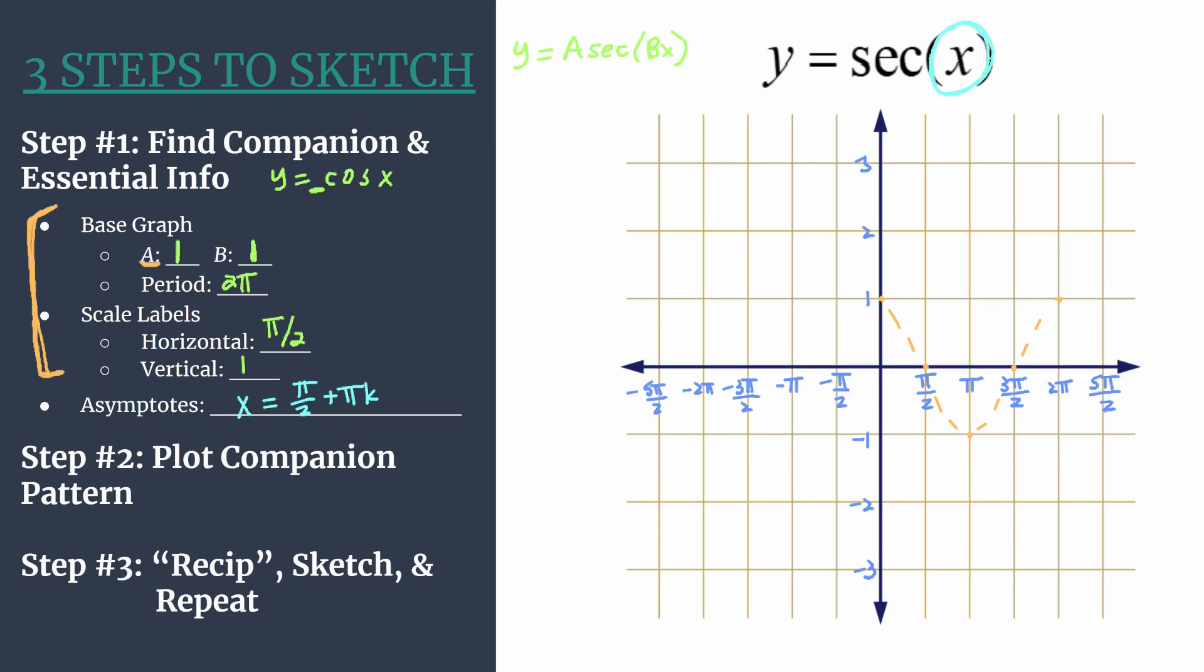We will recip, sketch, and repeat. So we're going to actually convert our companion pattern into the reciprocal graph, which is secant, the one we want.